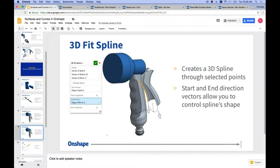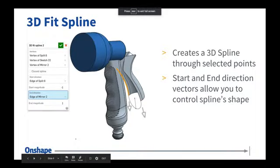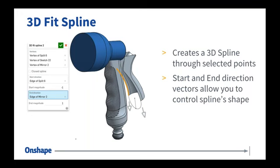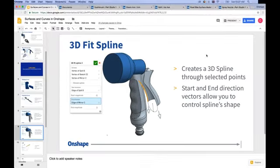The next curve on my list is 3D fit spline. Like the name implies, this creates a 3D spline through a series of points that you've selected. The power in this command, in my opinion, isn't necessarily the 3D spline itself — it's the ability to define the start and end direction. It allows you to define a vector as a direction for your 3D fit spline. The reason that's important is you'll often want a smooth transition from surrounding geometry.